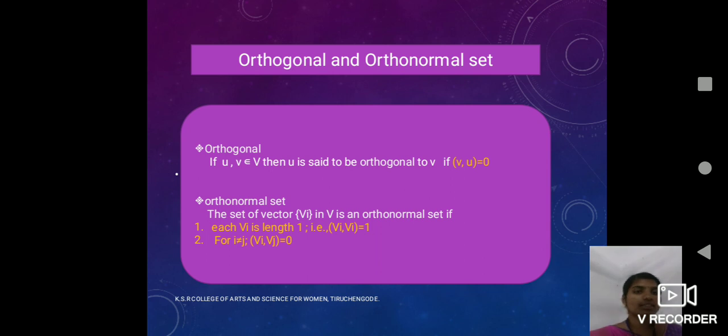Next, orthonormal set. The set of vectors Vi in a vector space V is an orthonormal set. Then it satisfies two conditions. First, if I equal to J, then each vector's length is 1. Next, for I not equal to J, then each vector's length is 0.